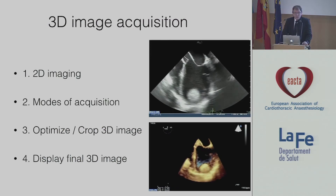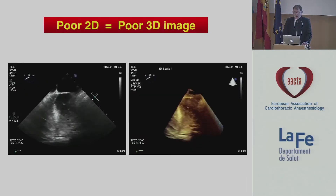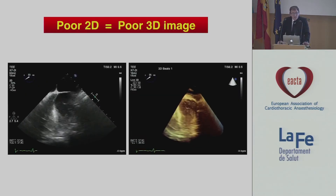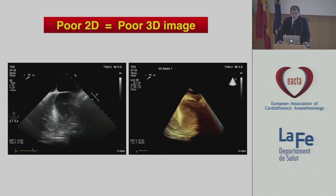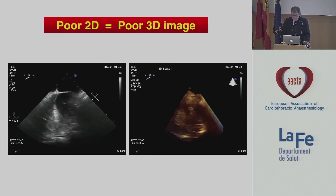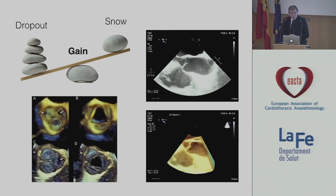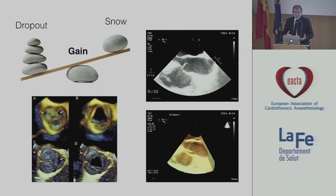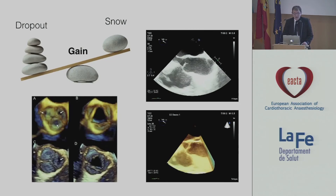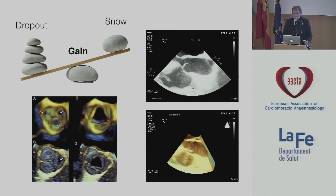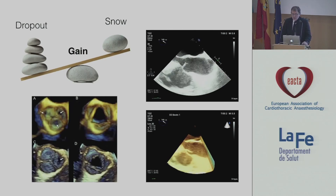This is a short outline of my presentation. Of course, the first thing you need to do before acquiring three-dimensional echocardiography data sets is to acquire good 2D images. Poor 2D images means poor 3D images. Try to optimize your two-dimensional images by adjusting the gain and the compression — it's a balance between under-gain, which gives you dropouts in 3D as you can see here pointed out with the white arrows, or too much gain, which gives rise to snow or a brownish smoke as you will see here.